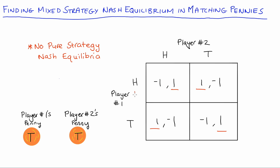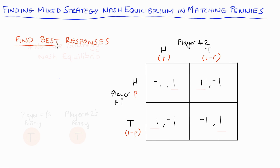If we allow for mixed strategies we might find another solution. Player one can play heads with some probability p and tails with probability one minus p. Player two can play heads with probability r and tails with probability one minus r. We're going to look for our mixed strategy Nash equilibrium.